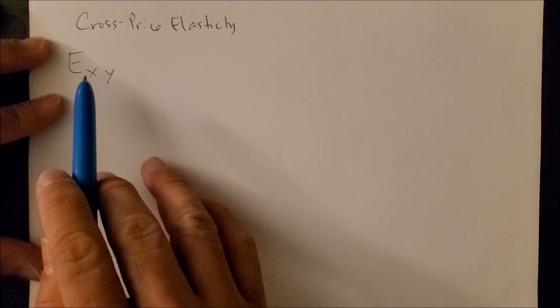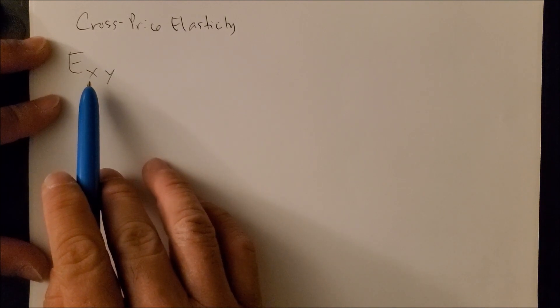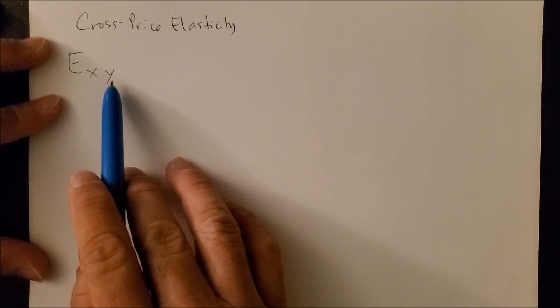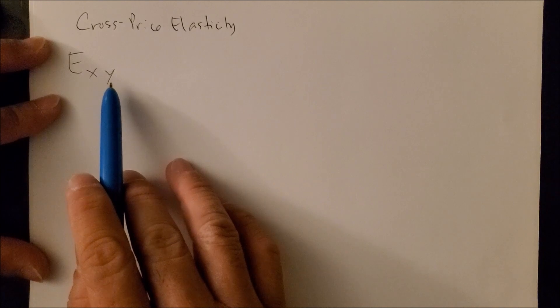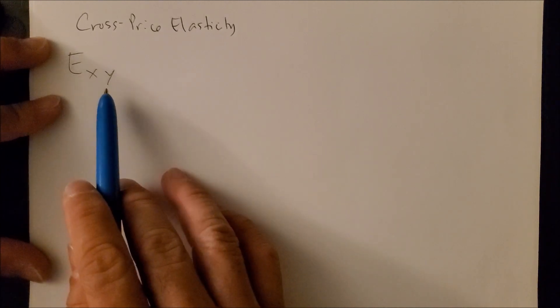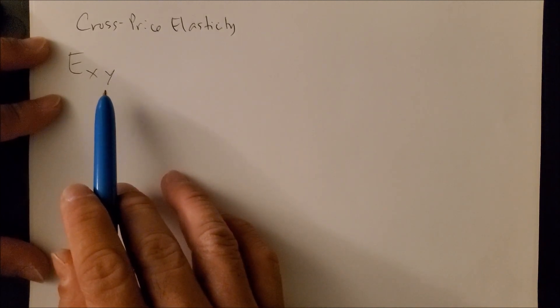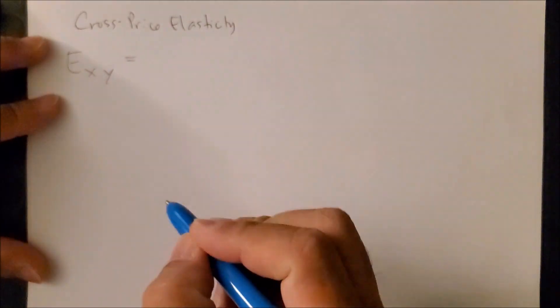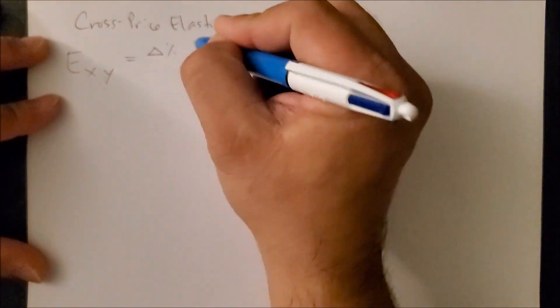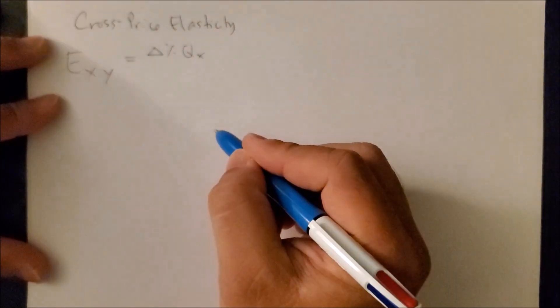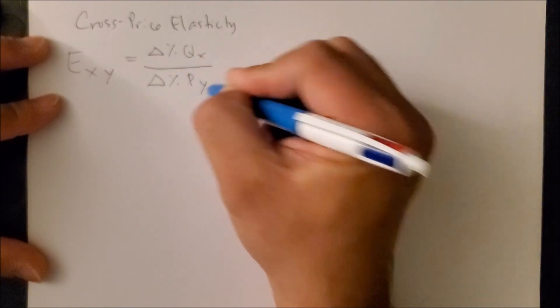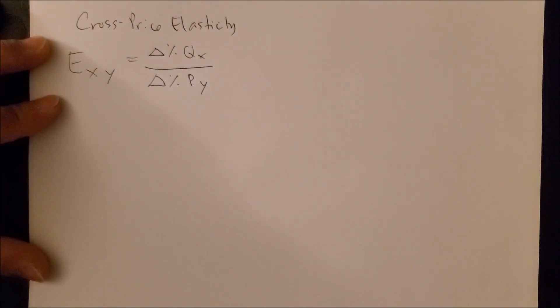Now, mind you, the X represents a good on the X-axis, usually the quantity. And Y on the Y-axis represents the price of a good that's changing. If we were to look at this in an equation format using the percent change, we would have, as follows, percent change in quantity of good X over the percent change of price in good Y.